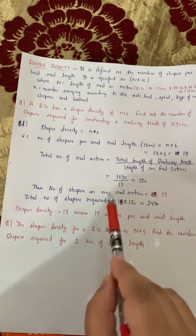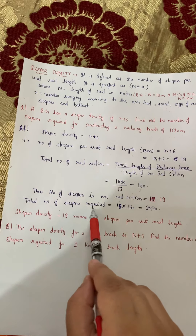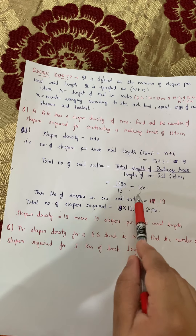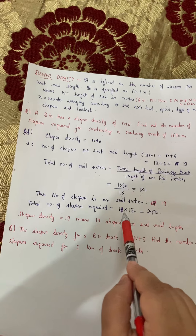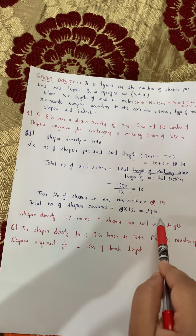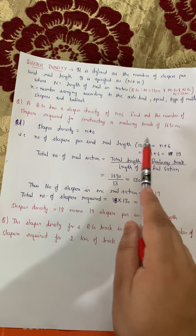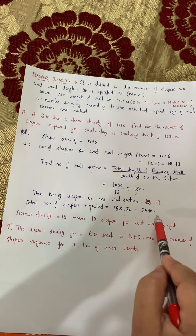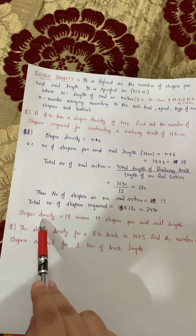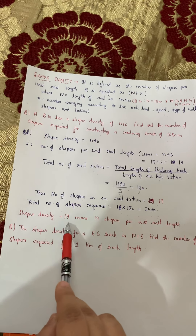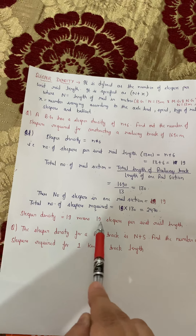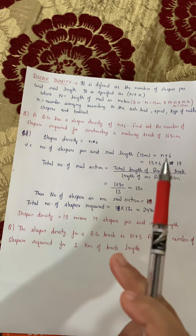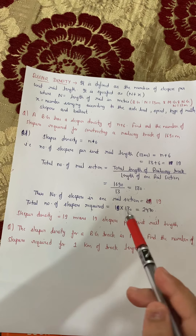Sleeper density given hai n plus 6. Is format mein given rehta hai n plus x — yahan x aapka ek number hota hai, jo given hai 6, and n hoti hai length of rail in meters. Number of sleepers per unit rail length ho jayenge n plus 6. Kyunki broad gauge hai, n ki value ho jayegi 13. So this would be 13 plus 6 equals to 19 — us puri rail length mein humare 19 sleepers laid hain.